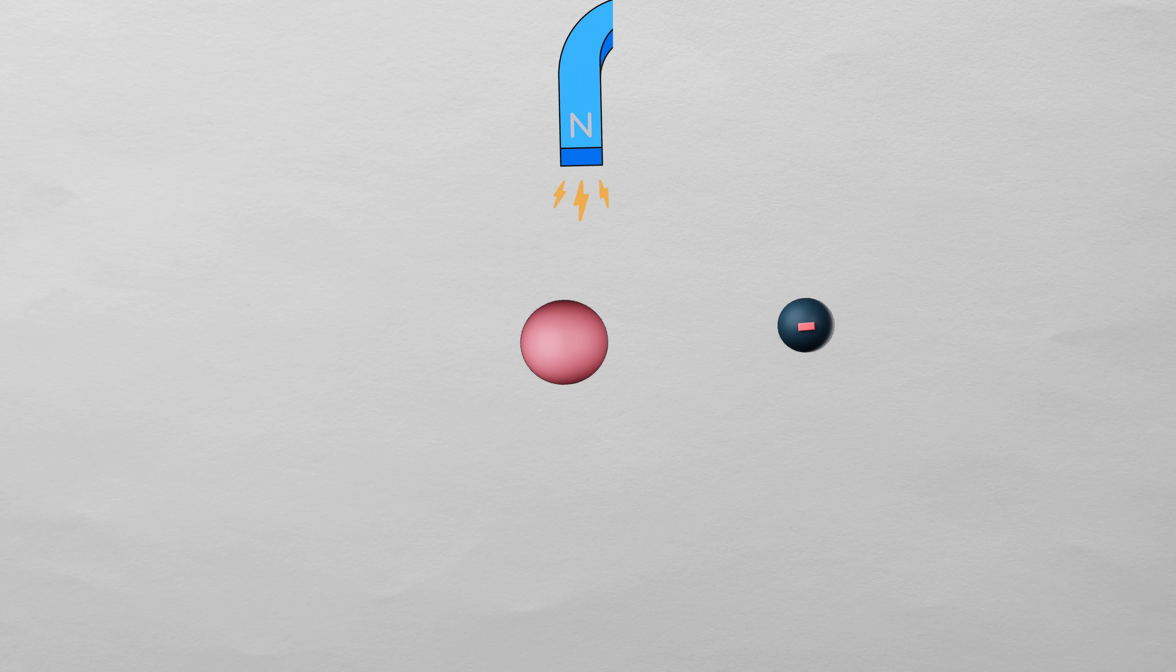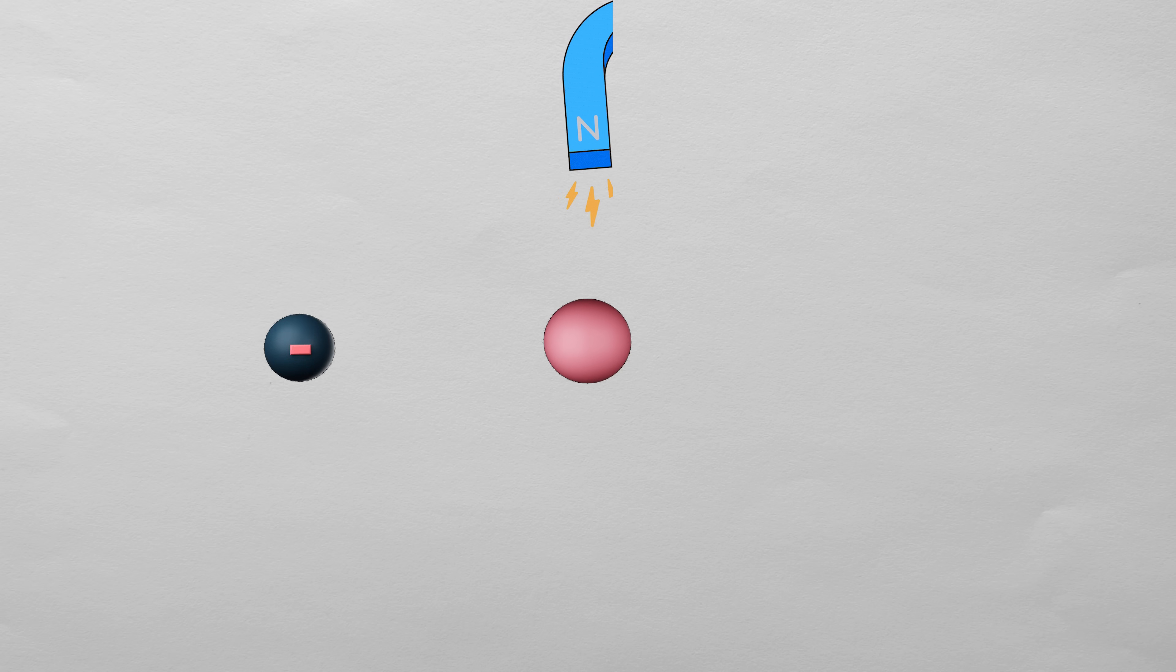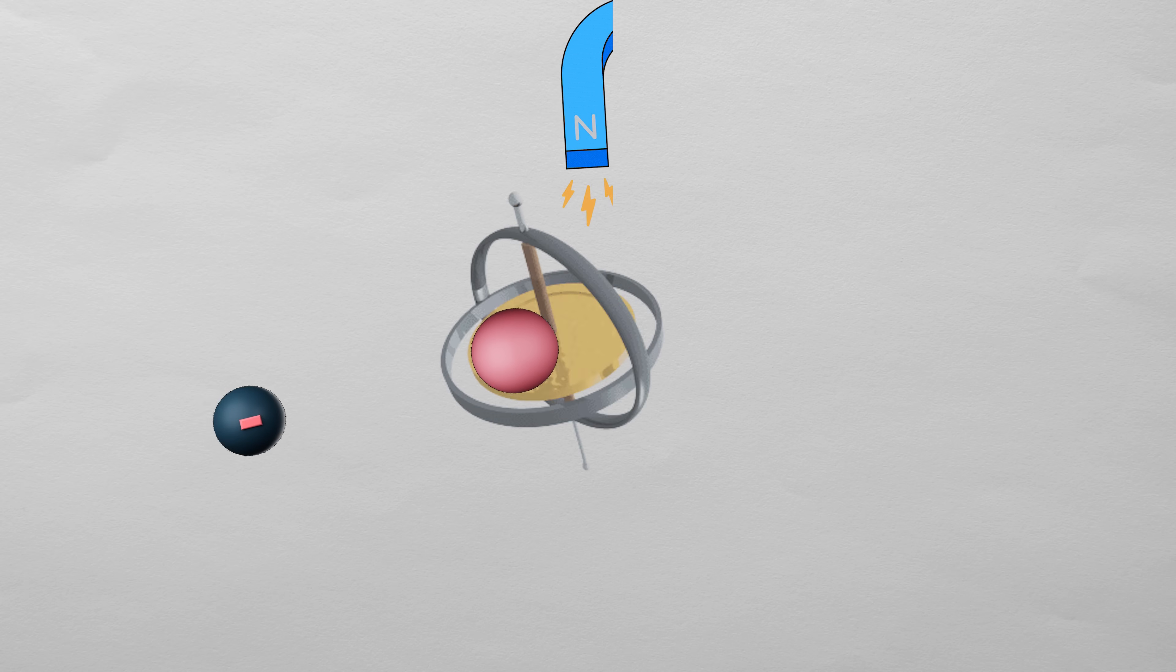However, even though there's no net magnetism, the individual electron orbitals still act like tiny magnets. If you put such an atom in an external magnetic field, it pushes on the orbiting electrons, and just like a spinning gyroscope, they start to precess, meaning their orbits start orbiting.